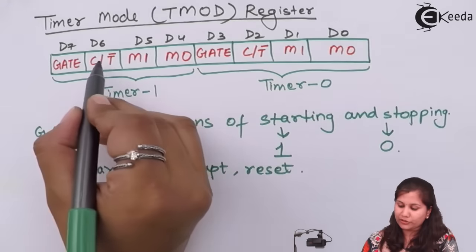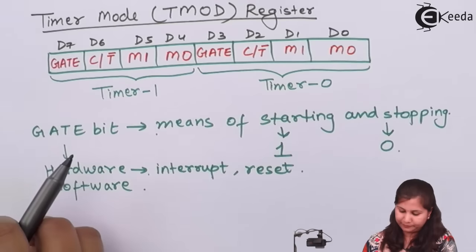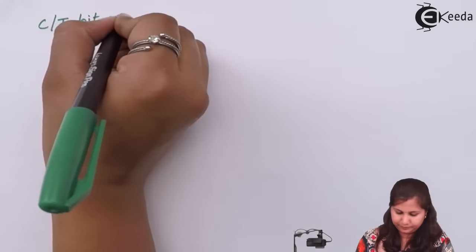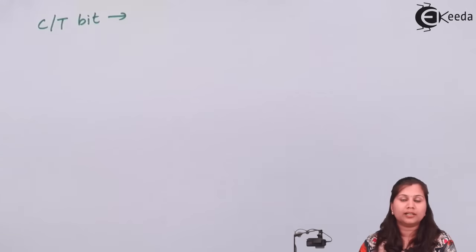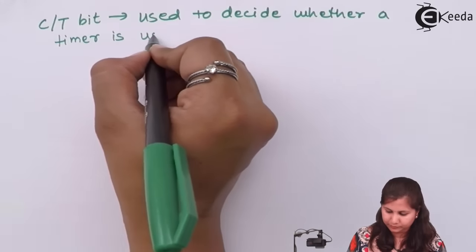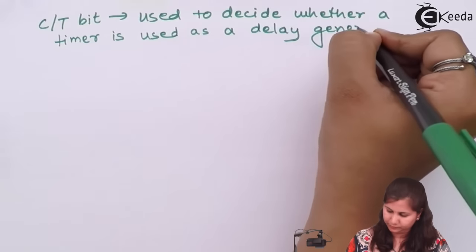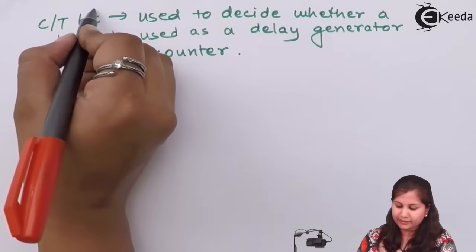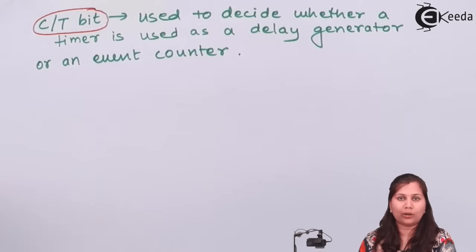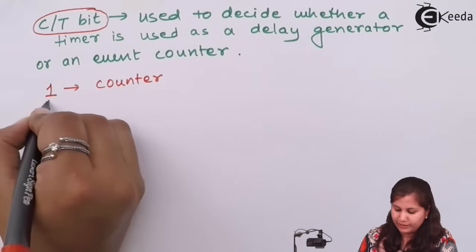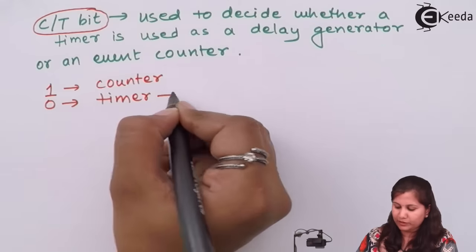The next bit in the two sections is the Counter/Timer bit. This bit decides whether the two timers will operate as a counter or as a timer — whether the timer generates a delay or counts the number of events. If this bit is 1, it acts as a counter; if it is 0, it acts as a timer and generates the delay.